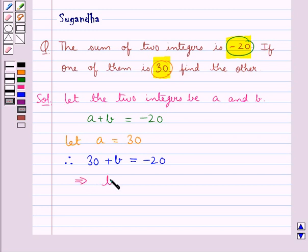This gives us B is equal to minus 20 minus 30. From here we have B is equal to minus 50.